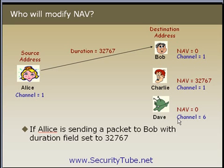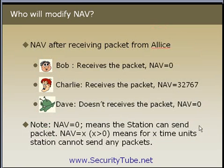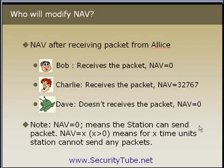There is no question of Dave updating the NAV value, because Dave is on channel 6. In the ideal case, Dave will not be receiving the packet transmitted by Alice, so Dave will not update his NAV value. After transmission of that packet: Bob will receive the packet and his NAV value will be 0; Charlie will receive the packet and his NAV value will be 32767; and Dave will not receive that packet and his NAV value will be 0. NAV equal to 0 means the station can transmit. A NAV value of X greater than 0 means the station cannot send any packet for X time units.